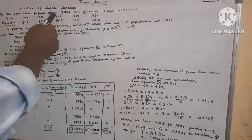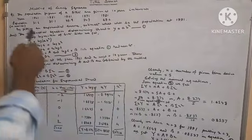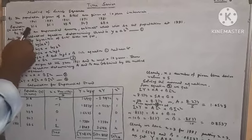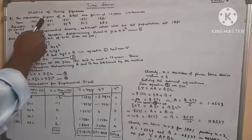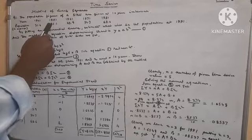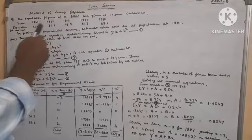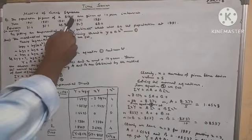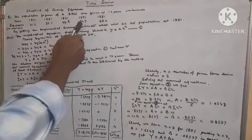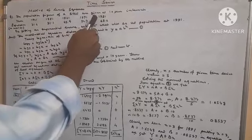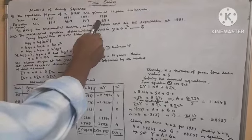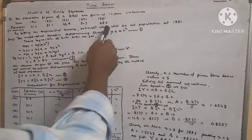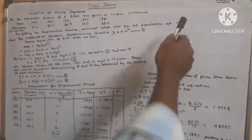Question given: The population figures of a state are given at 10-year intervals. Year 1941, population 31.6 crores. Year 1951, population 36.1 crores. Year 1961, population 43.9 crores. Year 1971, population 54.7 crores. Year 1981, population 68.6 crores. By fitting an exponential curve, estimate what will be the value of population at 1991.